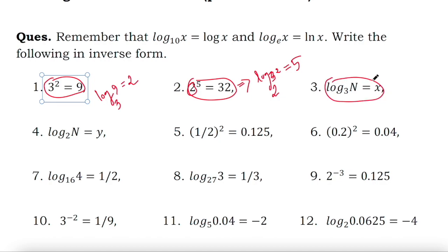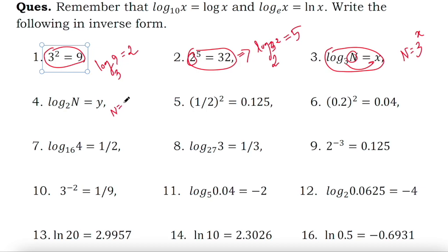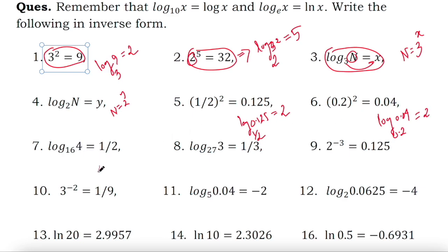The corresponding exponential form of the next one will be: n equals 3 to the power x, since n will be on the left side and 3 to the power x on the right side. And the next gives n equals 2 to the power y. Then: log 0.125 to the base one-half equals 2, and log 0.04 to the base 0.2 equals 2. And the exponential forms: 4 equals 16 to the power one-half, and 3 equals 27 to the power one-third.